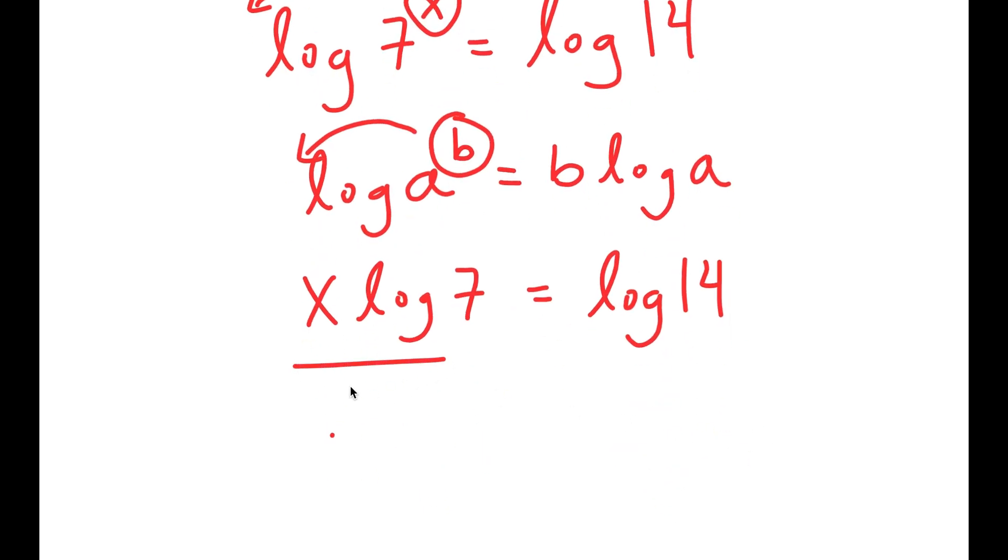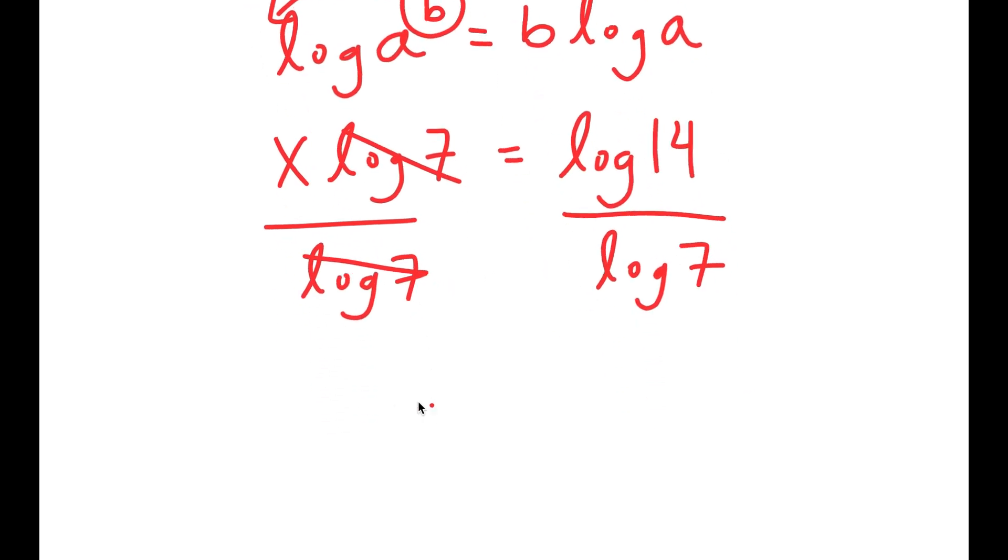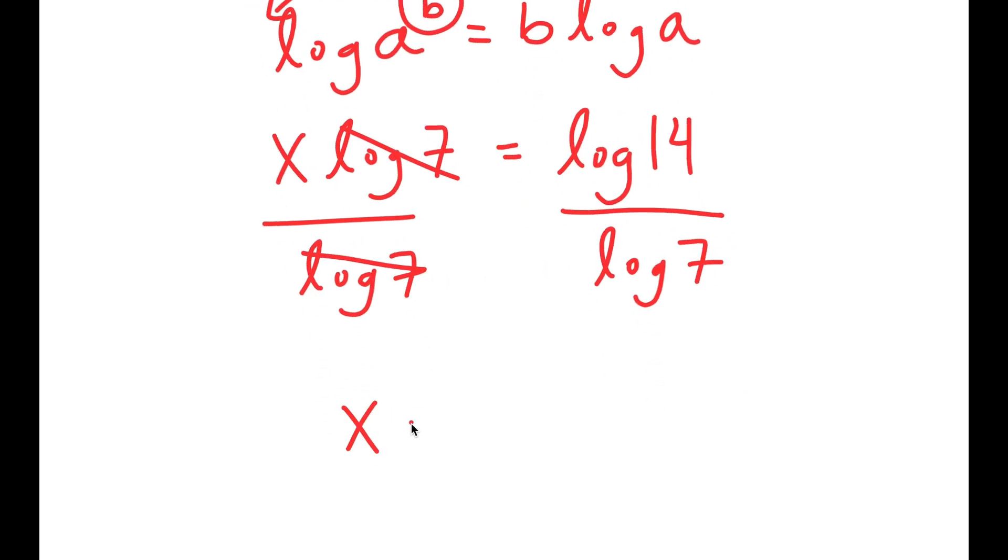Now I'm going to divide both sides by log 7. So then these two cancel out, and I get x is equal to log 14 over log 7.